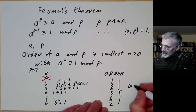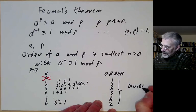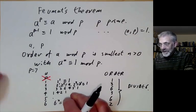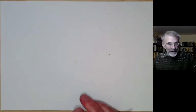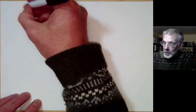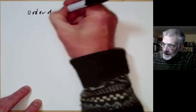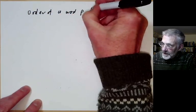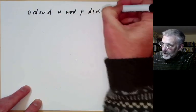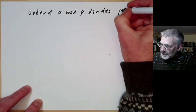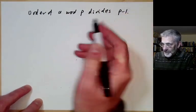They all divide 6. And the reason for this is that the order of a mod p divides p minus 1.